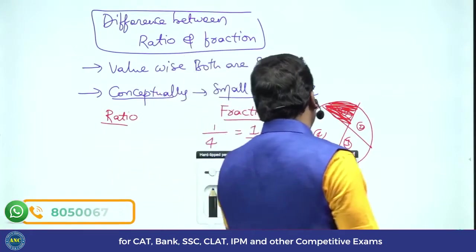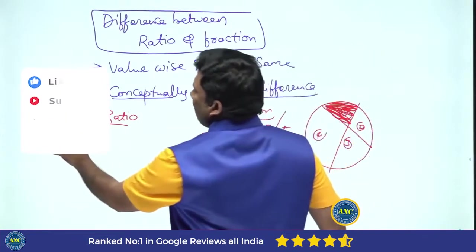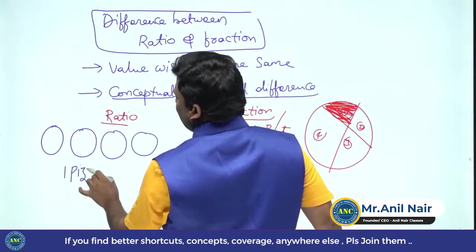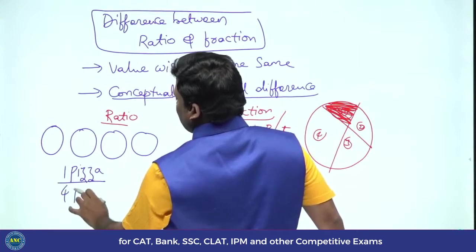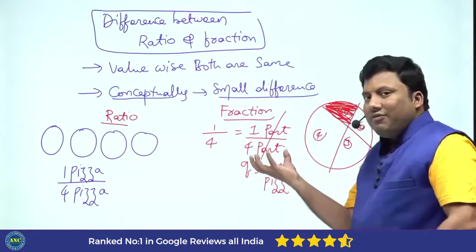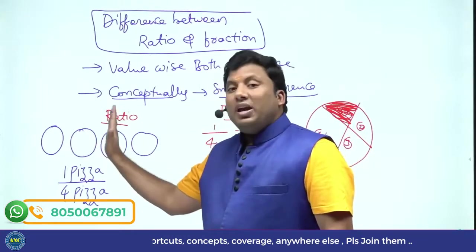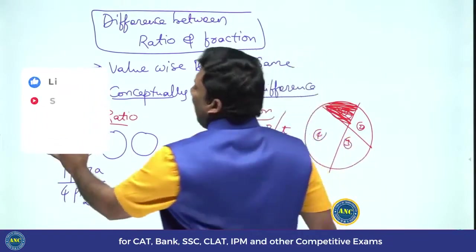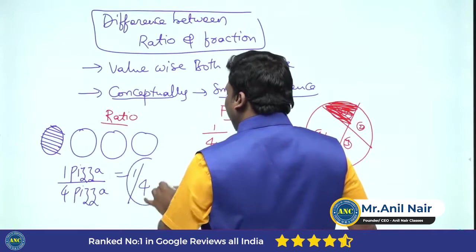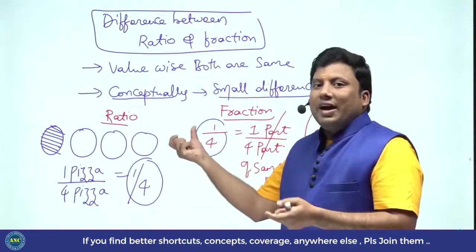Then what do you call it as ratio? People do not understand conceptually ratio and fractions. There are four pizzas. I am taking one pizza out of four pizzas. Here, within the same value, you are dividing it into parts. How many quantities you are taking? Four quantities. I need one pizza out of four pizzas. The value it is 1/4. Value wise both are same. But what is that it is getting difference?